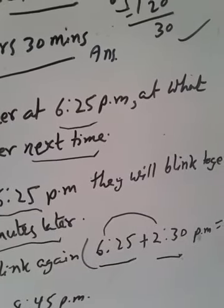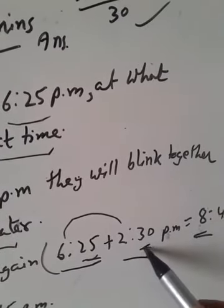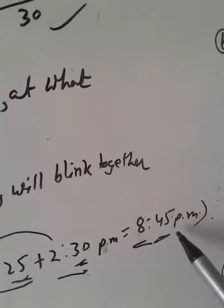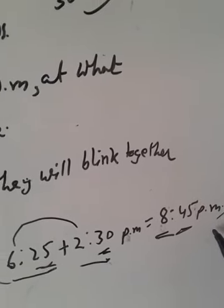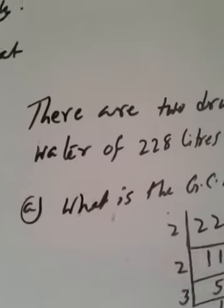6 and 8 hours 25 minutes, and 30 minutes 45 minutes. This means at 8:45 pm, they will blink together again. The next question is,